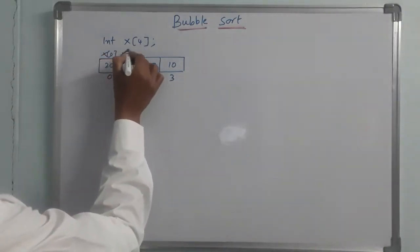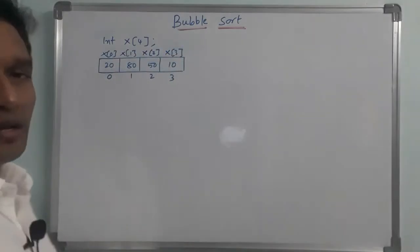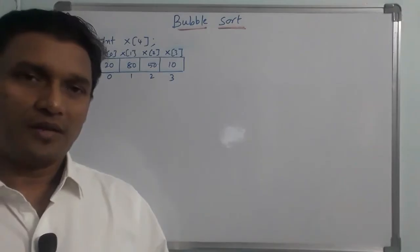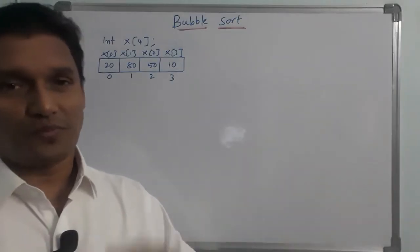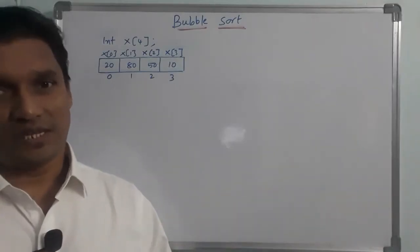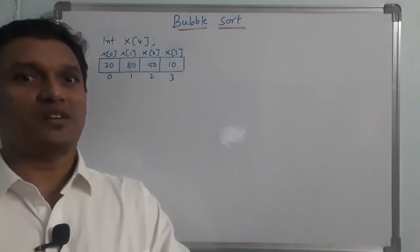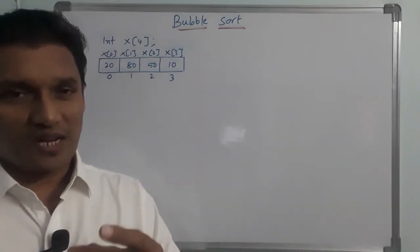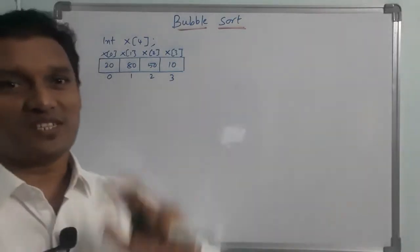In bubble sort, we first find out the highest element in the list and place it in the last position. In selection sort, we find the smallest element and fix it in the first position. But in bubble sort, we find the highest element and fix it in the last position, then find the second highest and fix it in the second-to-last position, and so on.